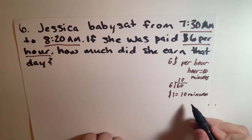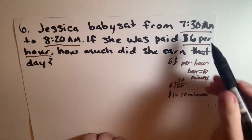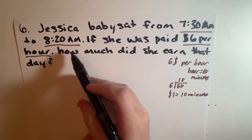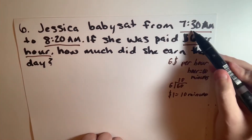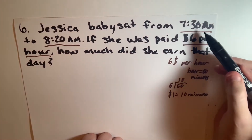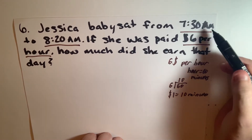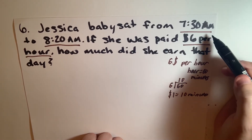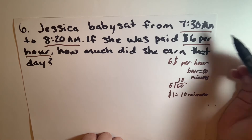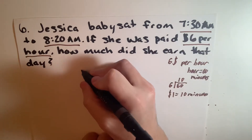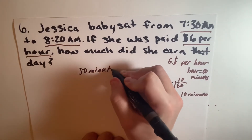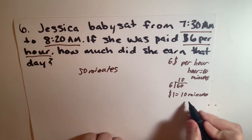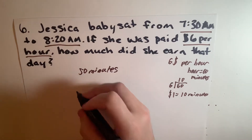So now that we have that out of the way, 7:30 to 8:20 — if we count up by 10s, it goes 7:30, 7:40, 7:50, 8:00, 8:10, and 8:20. So that is 50 minutes. And if we know 10 minutes equals $1,